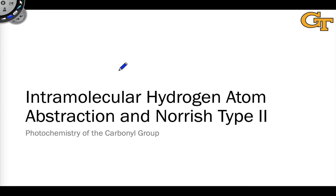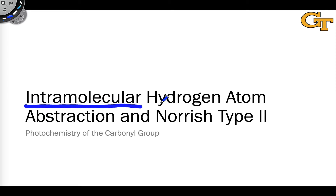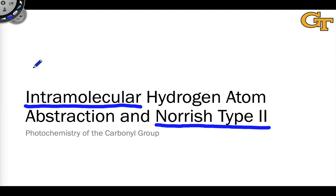In the last video, we saw intermolecular hydrogen atom abstraction by excited ketones from hydrogen donors. In this video, we're going to look at intramolecular hydrogen atom abstraction in which the hydrogen donor is internal to the molecule containing the excited ketone. This is also known as the Norrish type 2 reaction in honor of its discoverer, Norrish, and it's a very important process for ketones that contain gamma hydrogens.